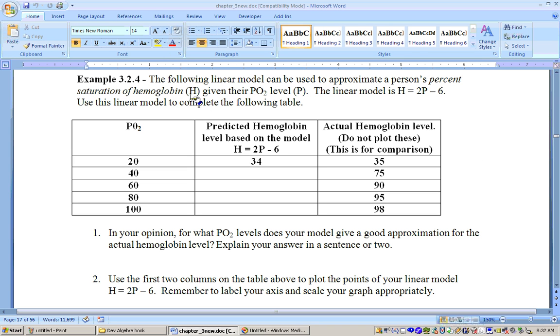On this problem, it gives you a linear equation here that gives you a model for the relationship between the percent saturation of hemoglobin and your PO2 level. It's just H, which stands for your percent predicted hemoglobin level, is equal to 2 times P, that's your PO2 level, minus 6. So, this is just a little linear equation.